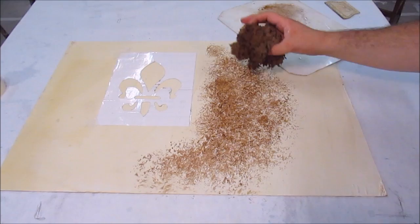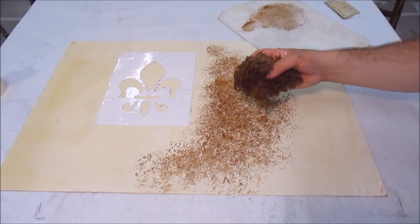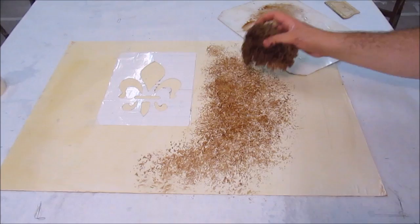The essential part of this is to constantly change the direction of the sponge as you apply the paint. Otherwise, you'll very quickly create a repeating pattern that you don't want.